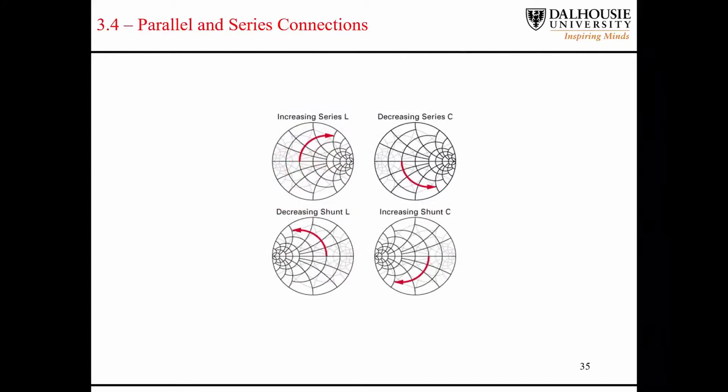One thing you need to understand when using the Smith chart is when you make rotations around the Smith chart, rotating upwards corresponds to increasing inductance, and rotating downward corresponds to a decrease in series capacitance.